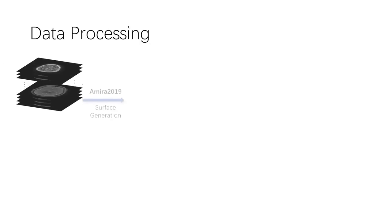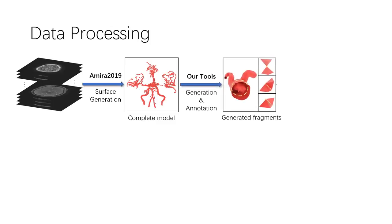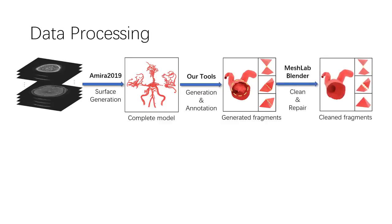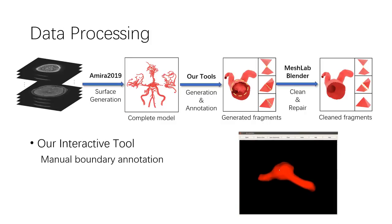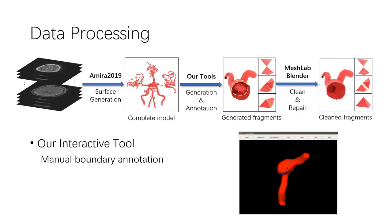For our data processing pipeline, medical experts first reconstructed complete 3D surface models of the entire brain from MRA images using commercial software. Then the segments are generated and annotated by our tools. Data cleaning and remeshing are conducted as required by mesh-based methods. Our interactive annotation tool allows users to annotate the boundary of aneurysms by clicking several points along the boundary, significantly improving the efficiency of manual annotation compared with existing commercial tools.